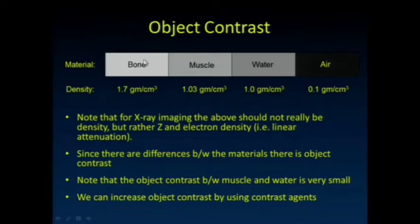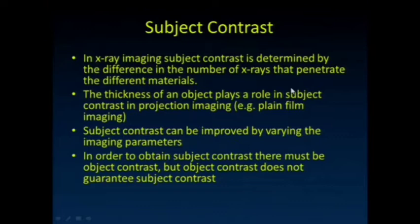Here's an example. Here's bone, muscle, water, and air, and I've just put their physical density here. I spent 15, 20 minutes trying to explain to you what linear attenuation was, and that it isn't exactly the same as physical density. But they're closely related to each other. Notice there's quite a big difference between bone and muscle, but muscle and water are very similar, but they're quite different from air. So there's really good object contrast here.